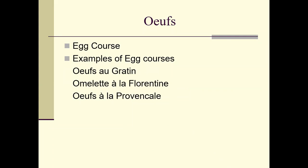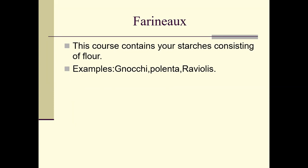For the oeuf course — egg dishes — examples include oeufs au gratin, omelette à la florentine, and oeufs à la provençale. These are examples of things you could incorporate into your French menu. The farinoise course contains your starches consisting of flour; examples include gnocchi, polenta dishes, ravioli, and pasta dishes.